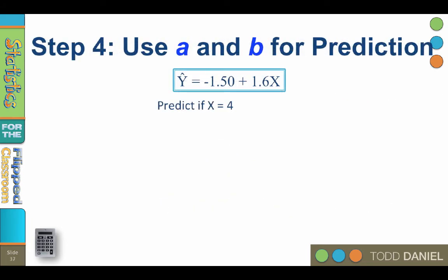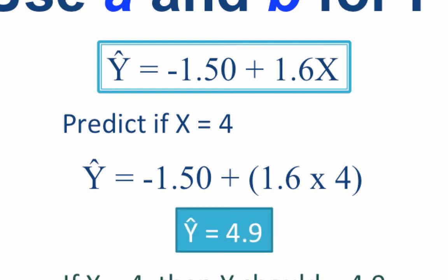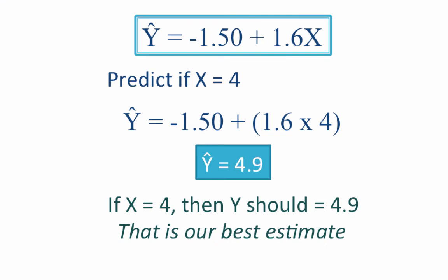Step four, use a and b for prediction. We now have our regression equation for our data. So let's plug in some x values and predict the y values. The first thing we want to know is what would be the predicted value of y for an x equal to 4. Well that will be simple enough. We plug in 4 where we have an x in our regression equation. Multiply 4 times 1.6 and subtract 1.50. The predicted value is 4.9. So if someone has an x score of 4, we predict that their y score will be 4.9. That is our best estimate.